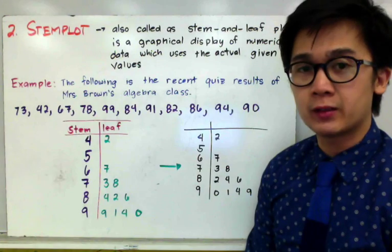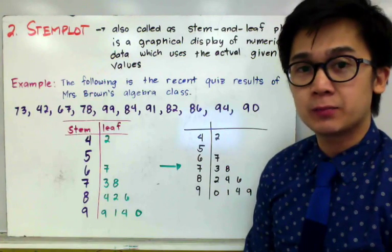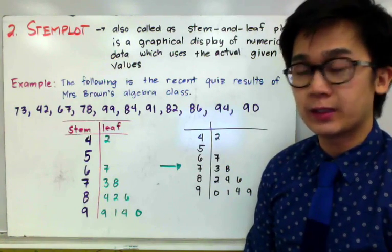Another method of representing numerical data, specifically univariate data set, in a graphical display will be our stem plot, also known as the stem and leaf plot.